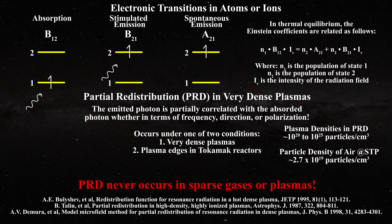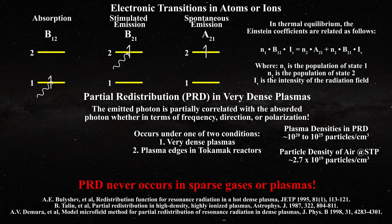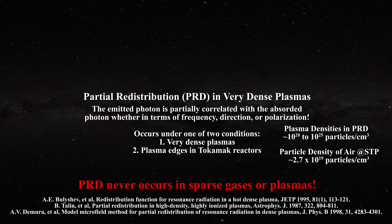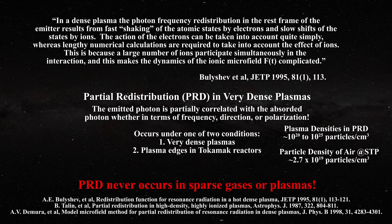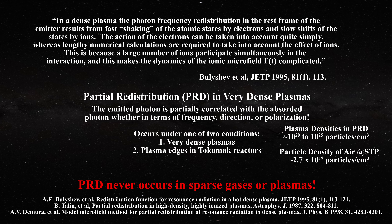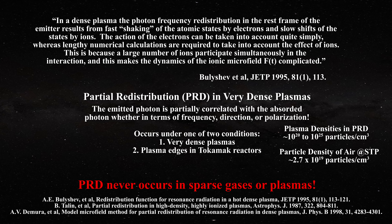In very dense plasmas, we know that coordination of ions can take place and assemblies of ions can become so large that microfields form. In the laboratory, partial redistribution is associated with coordination of the ion, as one can gather from this quotation: 'In a dense plasma, the photon frequency redistribution in the rest frame of the emitter results from fast shaking of the atomic states by electrons and slow shifts of the states by ions. A large number of ions participate simultaneously in the interaction, and this makes the dynamics of the ionic microfield complicated.'